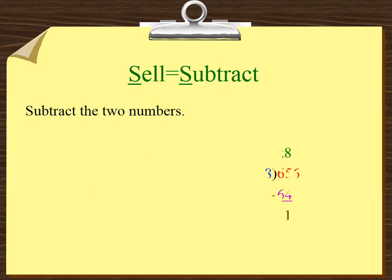Sell equals subtract. Subtract the two numbers. 65 minus 64.